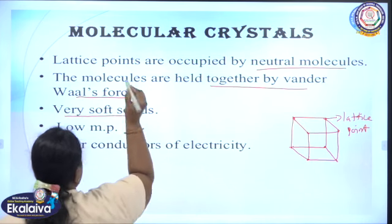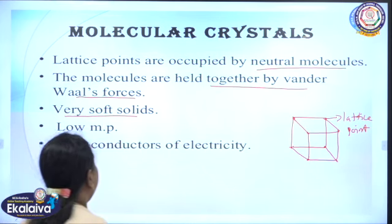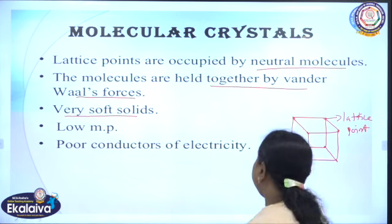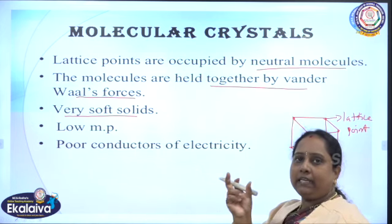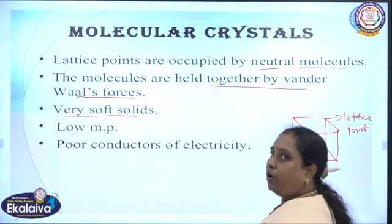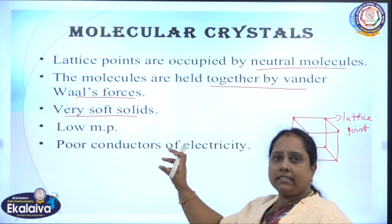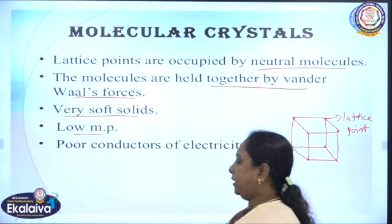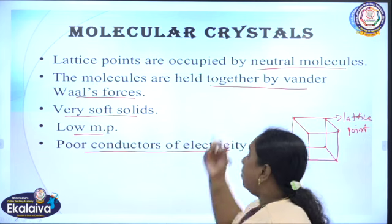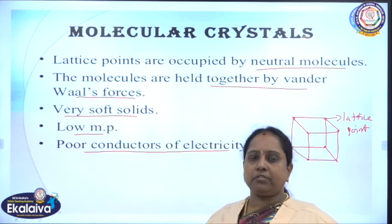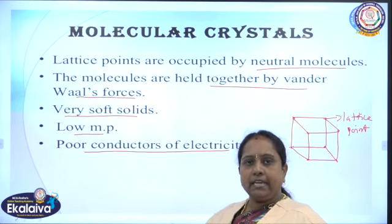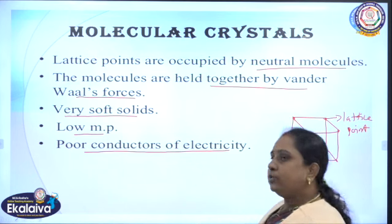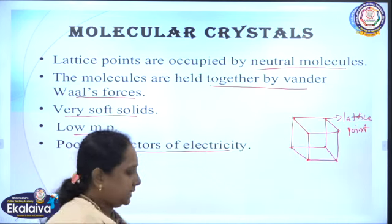Because of the weak Van der Waals force of attraction, molecular crystals are very soft in nature. They consume very less energy to break the bond between particles — the bond dissociation energy is low. So the melting point is in a very low range. They are also poor conductors of electricity because the molecules are neutral; they have no positive or negative charges, so they are not able to conduct electricity.